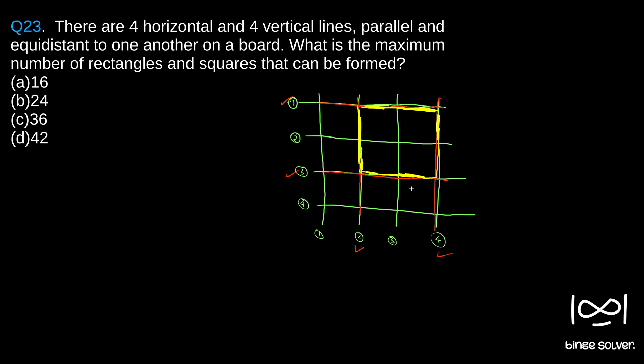No matter what square or rectangle you choose from this, it will be a combination of two vertical lines and two horizontal lines. I'll show you another example. Say I randomly choose a rectangle like this - this is a rectangle, right?